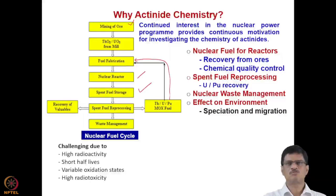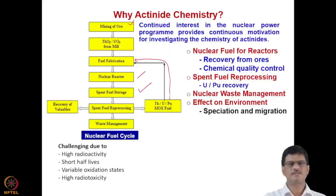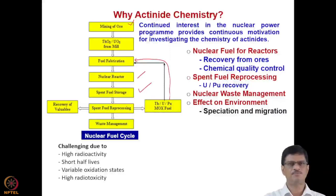That is why one needs to study the chemistry of actinides — in such cases, the speciation and migration of actinides, mainly that of plutonium, needs to be understood. Apart from applications in the nuclear fuel cycle and environmental chemistry, actinide chemistry is also a challenging study because of their interesting chemistry. This is due to their high radioactivity, short half-lives, variable oxidation states, and very high radiotoxicity, making laboratory manipulations very challenging.